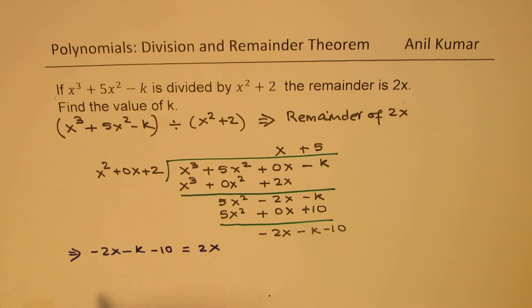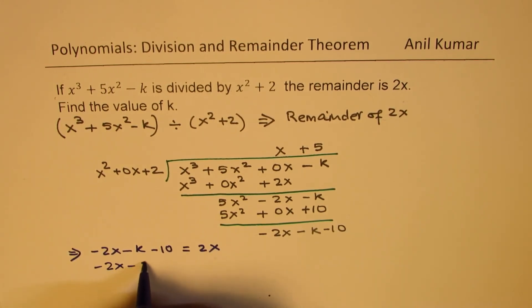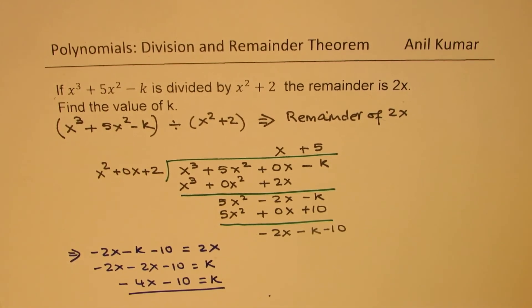So taking this on the left side, we get minus 2x minus 2x. We are taking this 2x on the left side, minus 10 equals k. So which is minus 4x minus 10 equals k. So we get the value of k, which should be minus 4x minus 10.